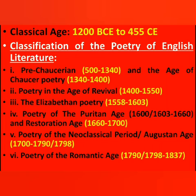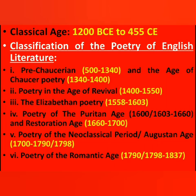Now we have to know about the periods of English literature in which poetry was mainstream. First, we have pre-Chaucerian poetry, with a time span of 500 CE to 1340, which includes all poetry of the Anglo-Saxon period and medieval poetry before Chaucer. Then we have Chaucerian poetry, spanning 1340 to 1400, followed by poetry in the Age of Revival, from 1400 to 1550.